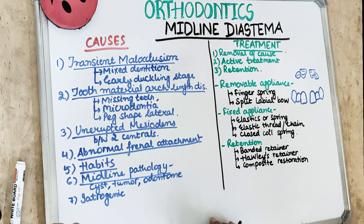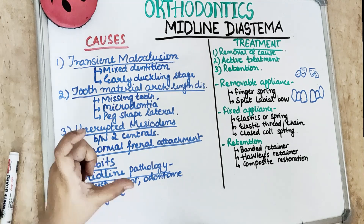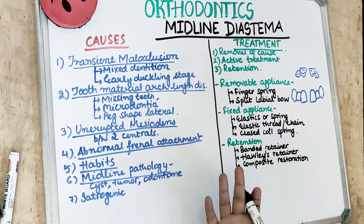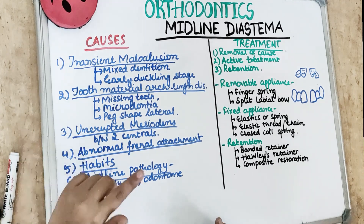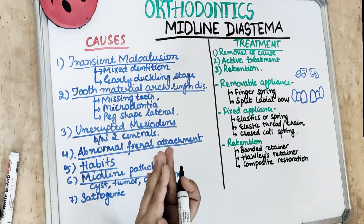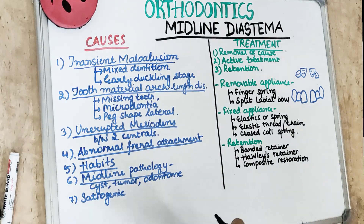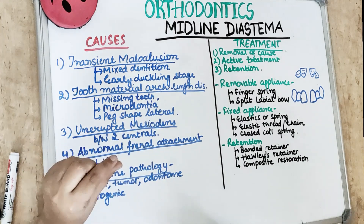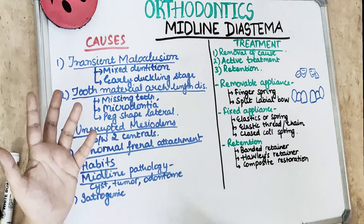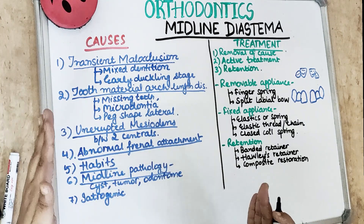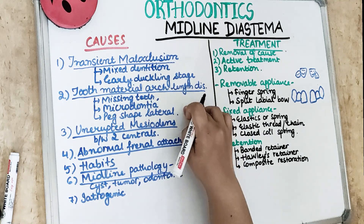The early duckling stage corrects the material arch length discrepancy. When the arch length is in excess — meaning there is more space in the arch and fewer teeth — due to reasons like peg-shaped lateral incisors, microdontia, or extracted teeth, there is less tooth material. This also causes midline diastema.